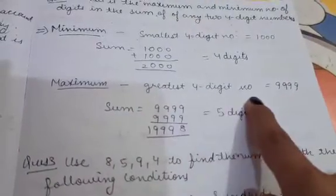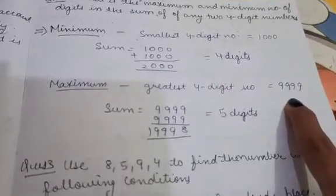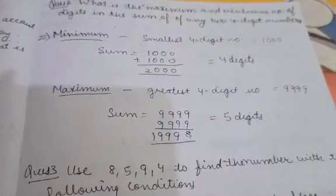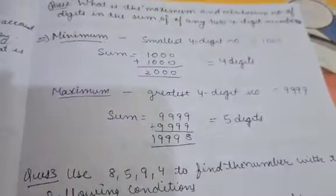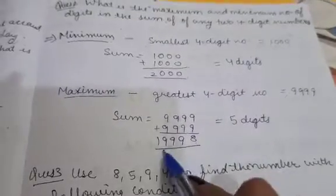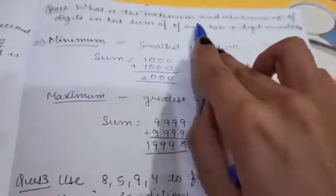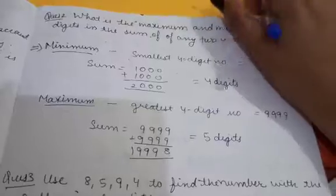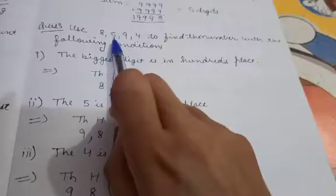For the maximum digits, we take the greatest four-digit number, which is nine thousand nine hundred and ninety-nine. Adding nine thousand nine hundred and ninety-nine plus nine thousand nine hundred and ninety-nine gives nineteen thousand nine hundred and ninety-eight — a five-digit number. So the maximum number of digits in the sum of any two four-digit numbers is five.